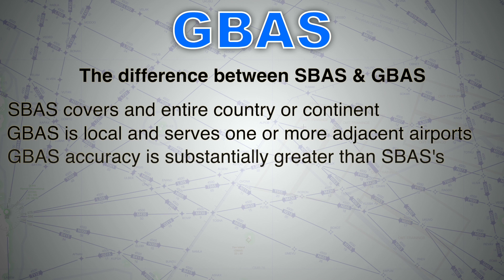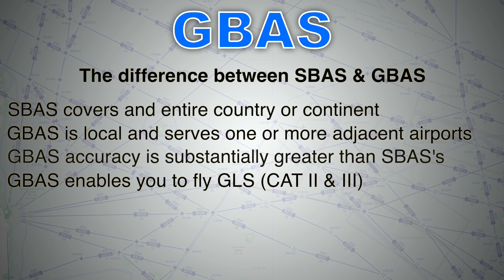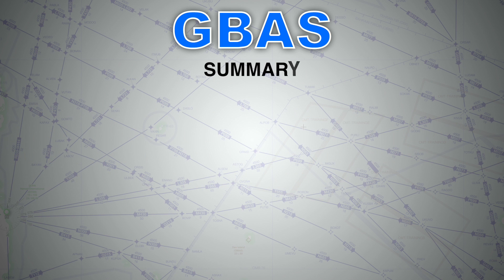SBAS signals, as the name implies, are received from geostationary satellites in space. GBAS, however, is a ground-based system where all antennas are installed on the ground and communicate with the aircraft using VHF data link one-way transmissions. With SBAS you can fly an LPV approach, classified under APV — approaches with vertical guidance. GBAS, however, enables you to fly a GLS approach with CAT 2 and CAT 3 minimums.